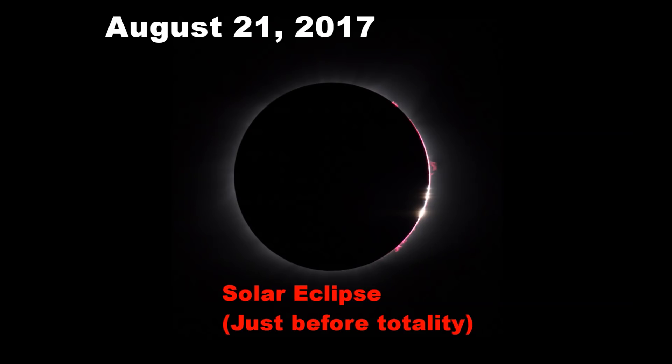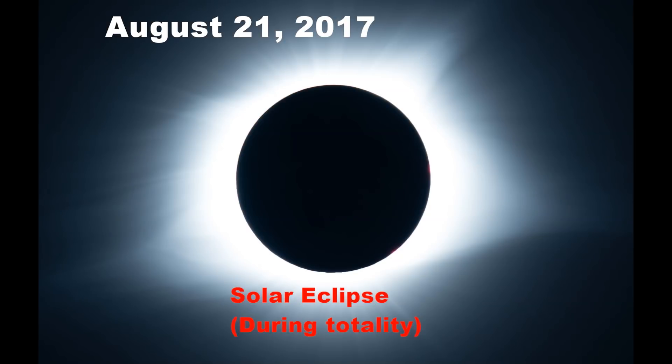In August of 2017, there was a total solar eclipse visible in North America for the first time in many years. A solar eclipse is a stunningly beautiful event when you can see only the eerie outer layer of the sun known as the corona.